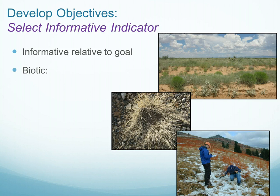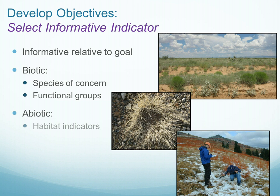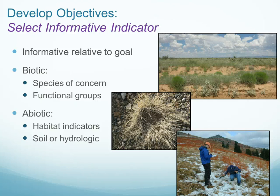We need to select an informative indicator that will provide sufficient information relative to our management goals. Sometimes these indicators are biotic, such as species of concern or possibly at the level of functional groups, and sometimes the informative indicators are abiotic, such as habitat indicators or soil or hydrologic characteristics of the site.